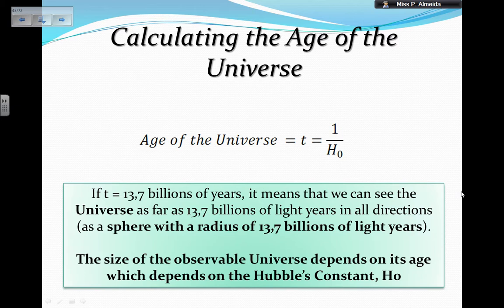If the time is 13.7 billion years, which is more or less what we say at the moment, it means that we can see the universe as far as 13.7 billion years in all directions, as if we were in the center of a sphere. The size of the observable universe depends on the age, and that depends on the Hubble constant. The size depends on the age because it depends on how long the universe is expanding. The more it expands, the bigger it becomes. The age depends on the Hubble constant H₀, because the formula is that the time in seconds equals 1 over H₀. That's why the Hubble constant is so important.